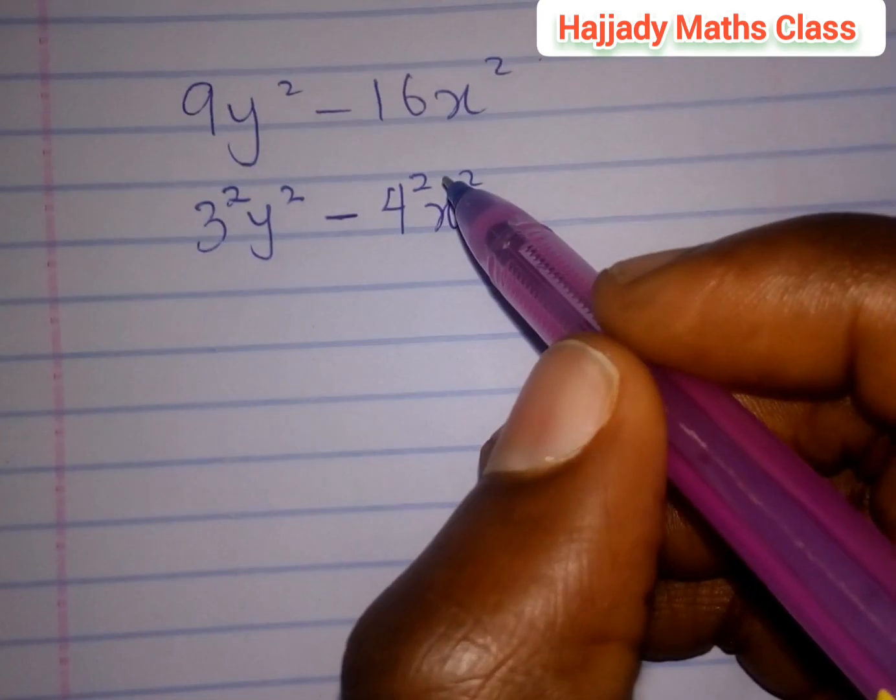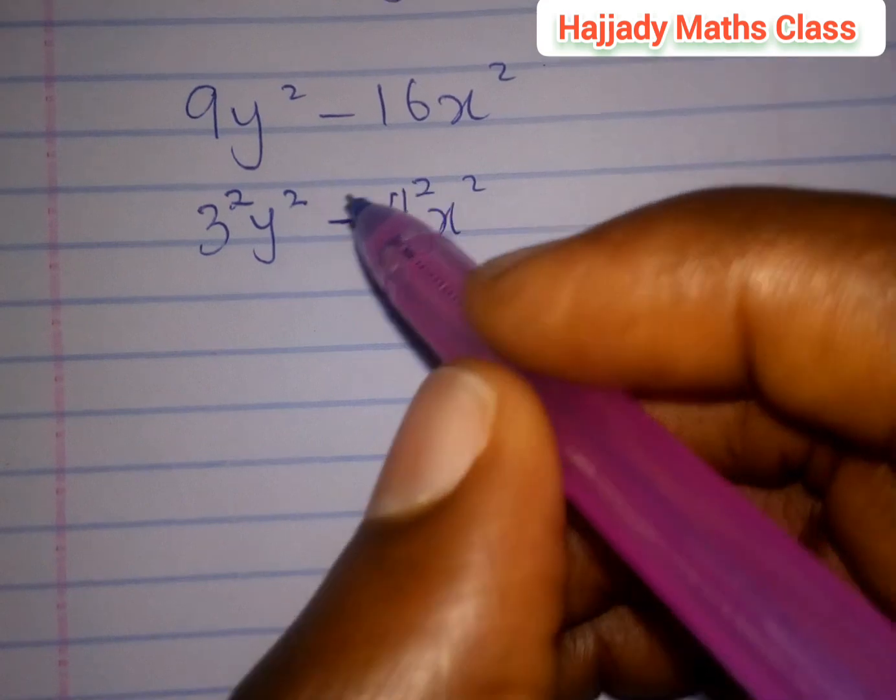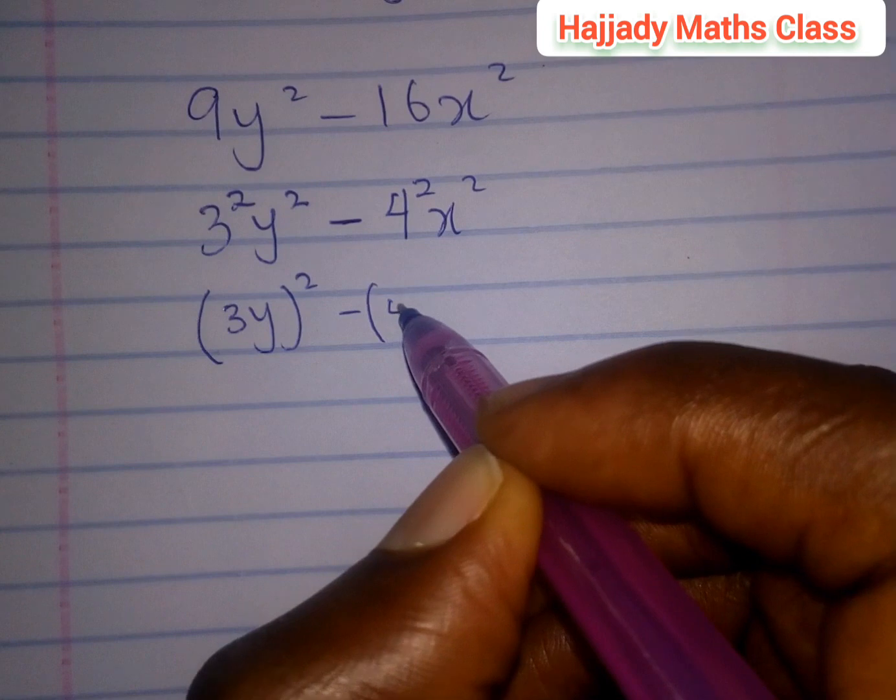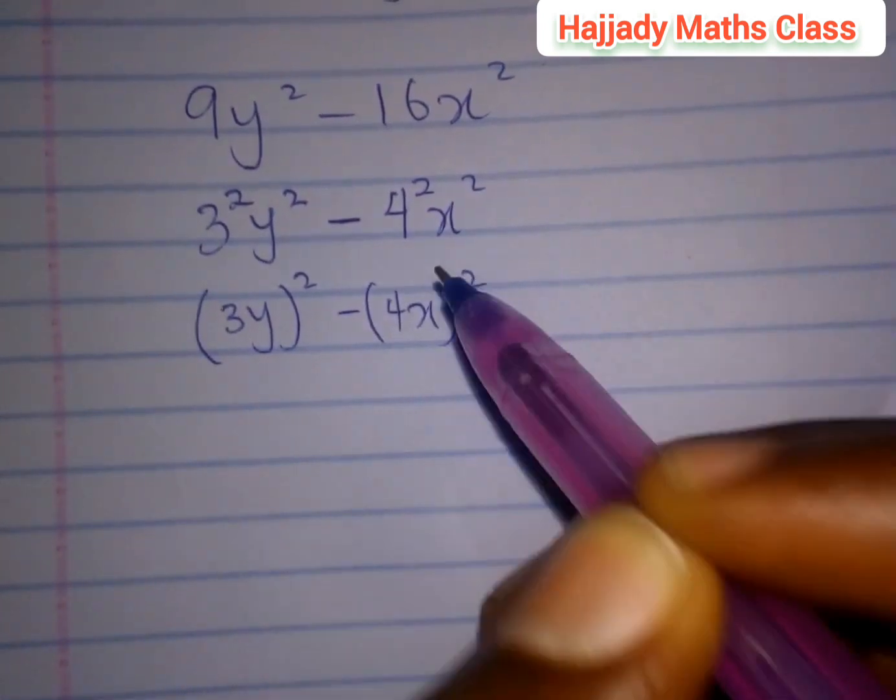So, in order to proceed with this, we know that this is the same as 3y all squared minus 4x all squared.